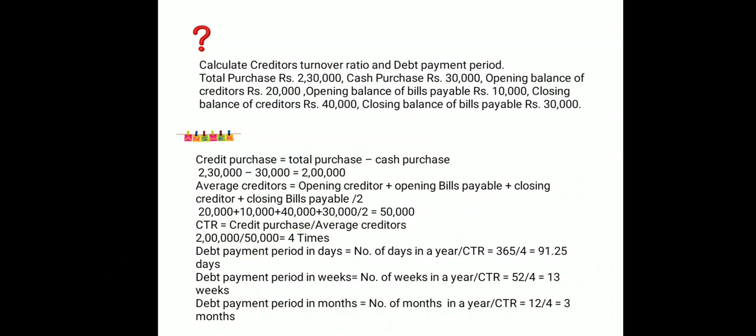Creditors Turnover Ratio = credit purchases divided by average creditors. Credit purchase = total purchase minus cash purchase = 2,30,000 minus 30,000 = 2,00,000. Average creditors = (opening creditors + opening bills payable + closing creditors + closing bills payable) divided by 2 = (20,000 + 10,000 + 40,000 + 30,000) divided by 2 = 50,000.